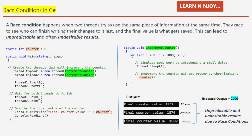After creating the thread objects, I start them with `thread1.Start()` and `thread2.Start()`, then issue `thread1.Join()` and `thread2.Join()`. These join calls make the main thread wait for both threads to finish. Once thread1 and thread2 complete, we display the final counter value with `Console.WriteLine("Final counter value: " + counter)`.